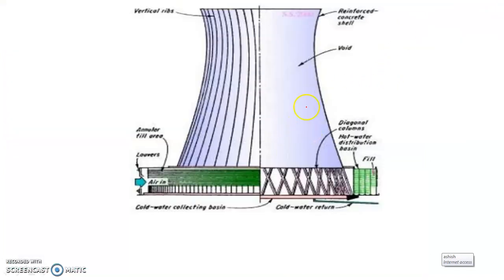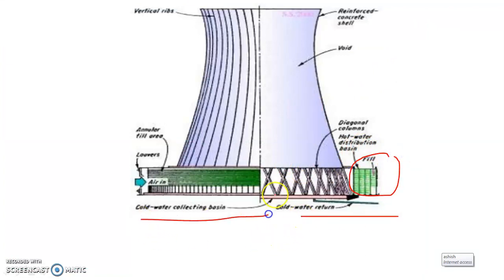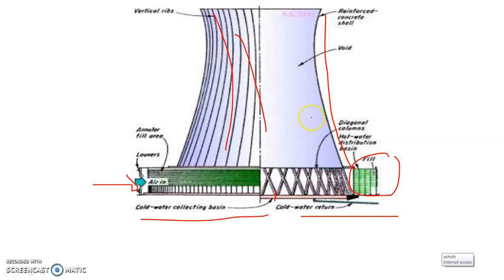In this hyperbolic cooling tower diagram, you can see the fill located outside, the cold water return line, the cold water collecting basin at the bottom, the air inlet at the bottom, and the vertical ribs. The reinforced concrete shell has a large void — this is the characteristic structure of the hyperbolic cooling tower.